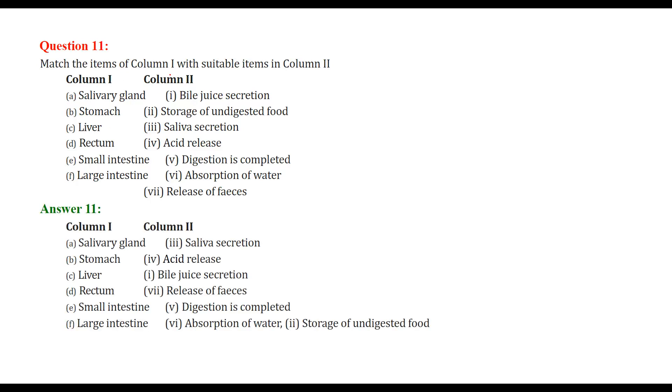Let us match these one with two. Salivary gland produces saliva, so it goes with saliva secretion. Stomach with acid release. Liver with bile juice secretion. Rectum with release of feces. Small intestine, here the digestion is complete. Large intestine, here we have absorption of water and storage of undigested food.